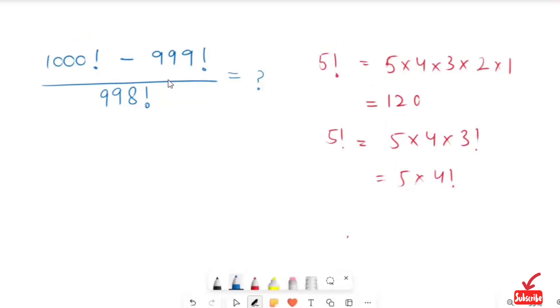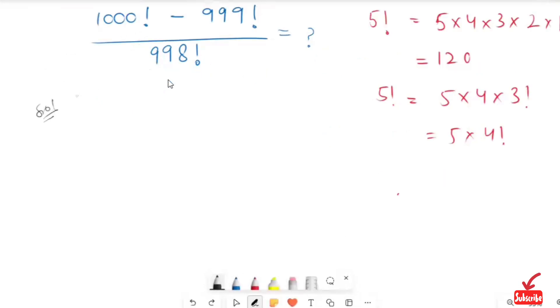For this given equation, I am going to write the value of 1000 factorial. That is how we are going to end up with 998 factorial. Because we have the denominator yet, 998 factorial. So 1000 times 999 times 998 factorial over 998 factorial, minus.